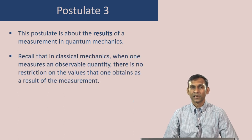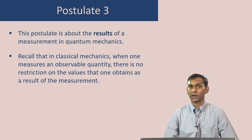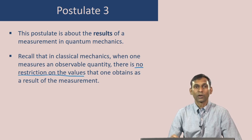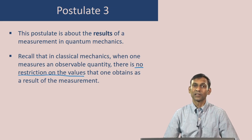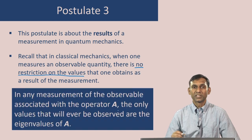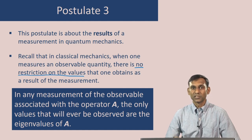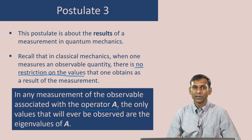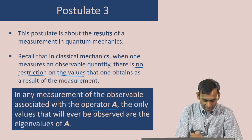Recall that in classical mechanics, if one measures an observable quantity — let us say we measure the energy of a particle — we can get any possible value of that energy. There is no restriction on the values that one obtains when making a measurement on a classical particle. However, that is different in quantum mechanics, and that is what postulate 3 is about. The statement of postulate 3 is that in any measurement of an observable which has the associated operator A, the only values that one will ever obtain are the eigenvalues of A.